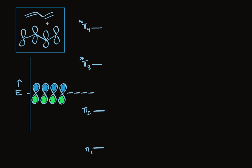1,3-butadiene has four atomic p orbitals on adjacent carbons. When they line up parallel with each other, they all interact, making a four-carbon pi system. MO theory says there will be four molecular orbitals. The energetics show that pi 1 and pi 2 are bonding orbitals, and pi 3 and pi 4 are antibonding orbitals, designated with an asterisk. Two of the molecular orbitals are stabilized and two are destabilized.